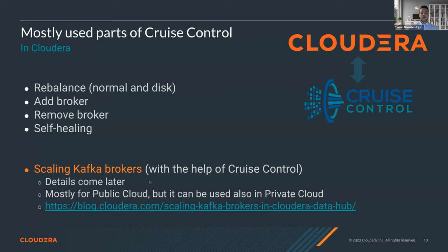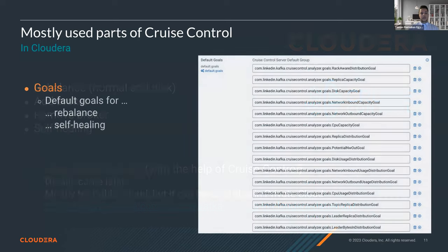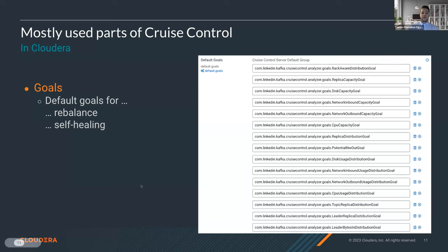In every production deployment, the number of Kafka nodes changes. Balancing performance and cloud cost requires administrators to scale up or scale down accordingly. There are a lot of goals enabled by default — rack, replica, network, disk, CPU, topic, and leader-related ones. By default, self-healing and rebalance calls use these goals, but you can configure specific goals for rebalance or self-healing separately. Anomaly detection is disabled by default but can be enabled. When enabled, it monitors the replica distribution goal, replica capacity goal, and disk capacity goal.